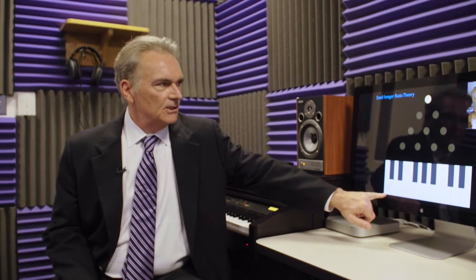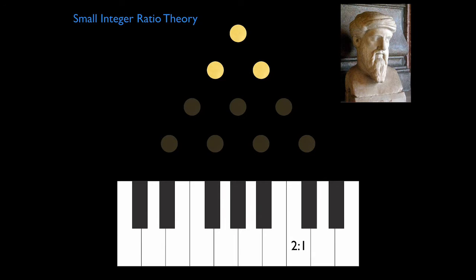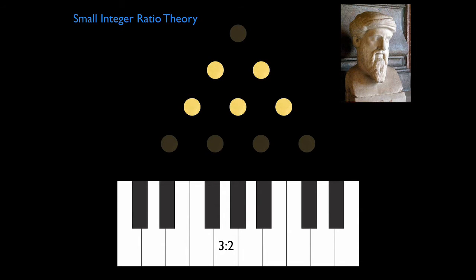The unison is the one-to-one. The octave is the two-to-one. So unison, octave. The perfect fifth is three-to-two. And the perfect fourth is four-to-three.